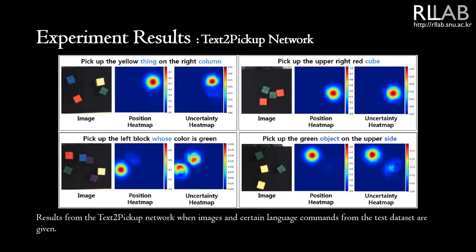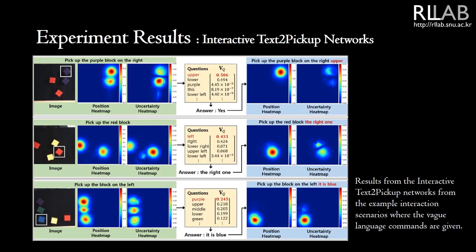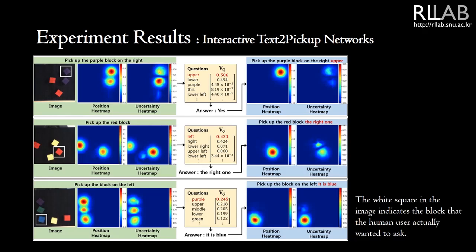Results from the text-to-pickup network when images and certain language commands from the test dataset are given. In the language command, the word written in blue is a new word which is not included in the training dataset. Results from the interactive text-to-pickup network from example interaction scenarios where vague language commands are given. The white square in the image indicates the block that the human user actually wanted.